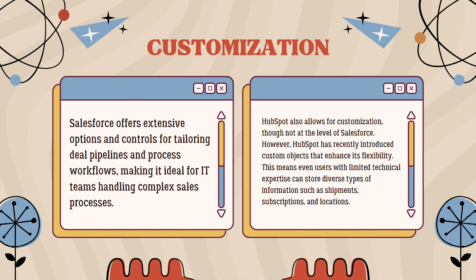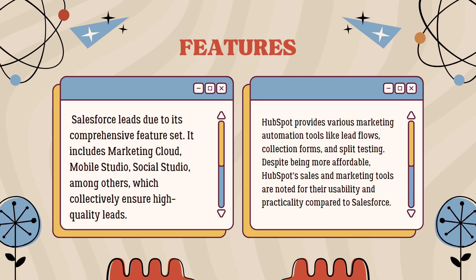Moving on to comparing the features of HubSpot and Salesforce: Salesforce leads due to its comprehensive feature set, including Marketing Cloud, Mobile Studio, and Social Studio, among others, which collectively ensure high-quality leads. On the other hand, HubSpot provides various marketing automation tools like lead flows, collecting forms, and split testing. Despite being more affordable, HubSpot's sales and marketing tools are noted for their usability and practicality compared to Salesforce.